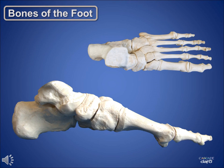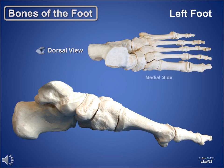This is a brief review of the bones of the foot, as well as some of the key landmarks of the foot often referred to when working with Cascade products. Let's get oriented. All the images you'll be seeing will be of a left foot. The upper image is a dorsal view, or a view from above. The lower image is the medial view, or a view from the side.